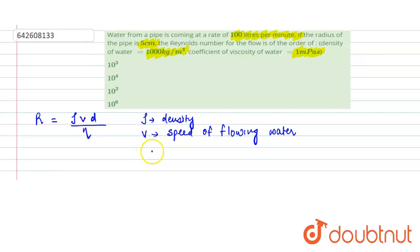d is the diameter of the tube, and η is the coefficient of viscosity.